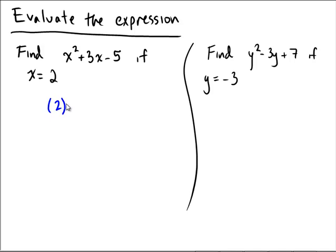So that would be the number 2 squared plus 3 times 2 minus 5. I always like to put those parentheses to represent where the x used to be. It'll make it very easy to keep track of, for example, negatives and things like that.